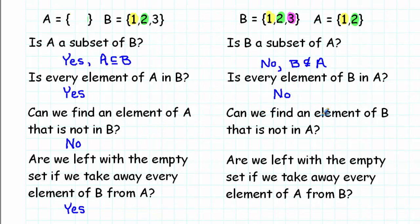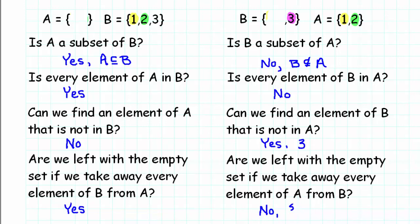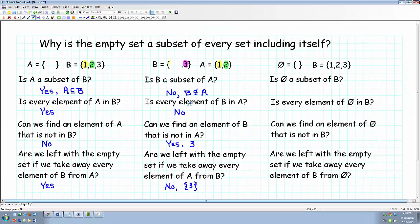What about our second example? Can we find an element of B that is not in A? Yes — we can find the number 3. 3 is in B, but it's not in A. What about the last question? Are we left with the empty set if we take away every element of A from B? A contains 1 — let's take it away. A contains 2 — let's take it away from B. We've taken away every element of A from B. Are we left with the empty set? No — we're left with a set that contains the number 3. So if B is not a subset of A, the answers to these last two questions are going to be yes and no.